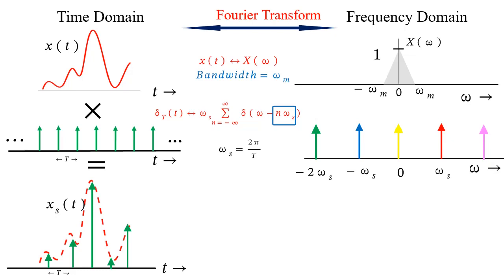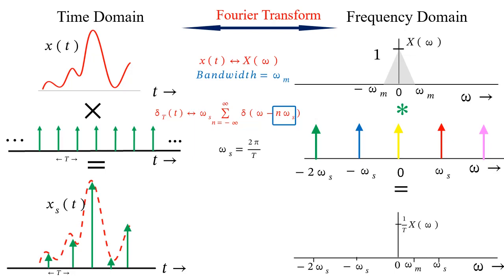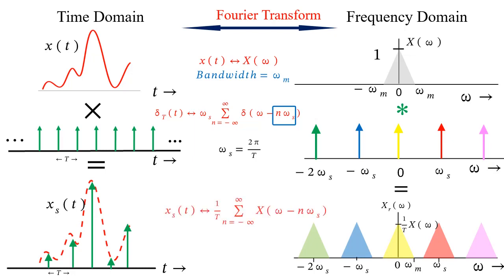The sampled signal x_s(t) was obtained by multiplying x(t) and the impulse train delta_T(t) in the time domain. The spectra of x_s(t) can thus be obtained by convolving their respective spectra in the frequency domain. The convolution of an impulse with any function results in the same function, but its location shifts to the location of the impulse. Thus, taking samples at T intervals in the time domain results in multiple copies of the spectra centered at n times omega_s, where n can take integer values.